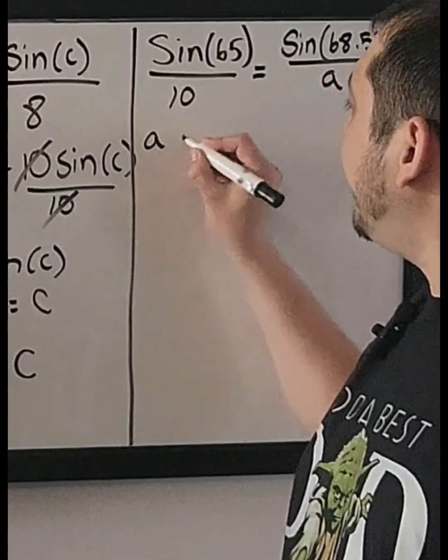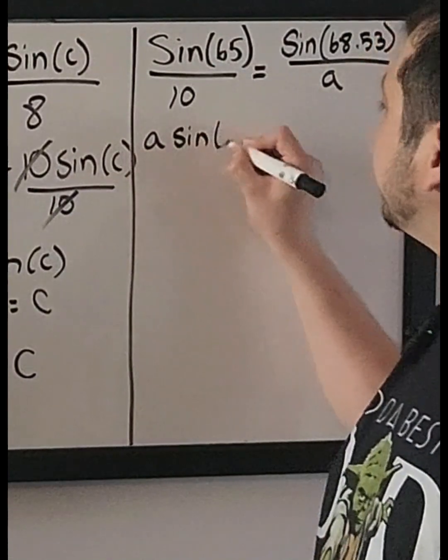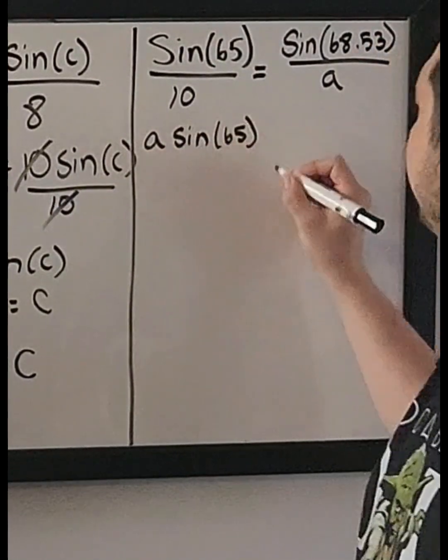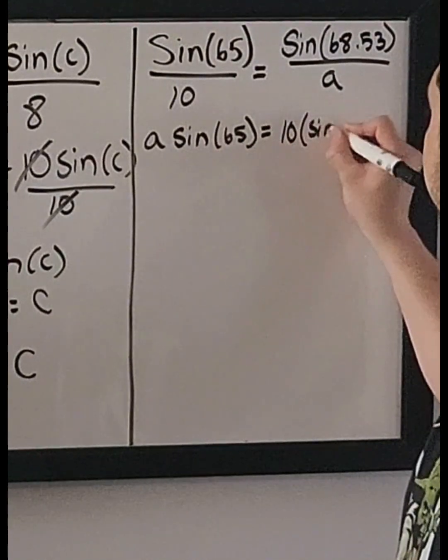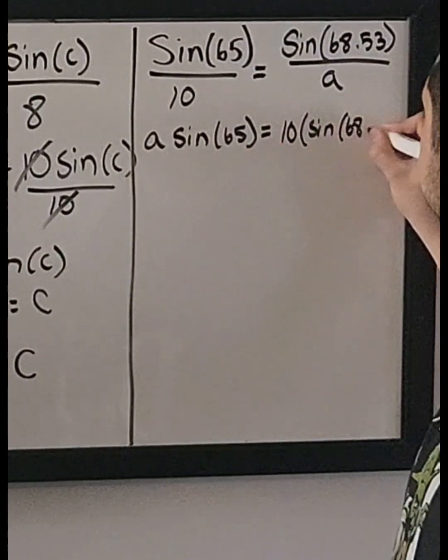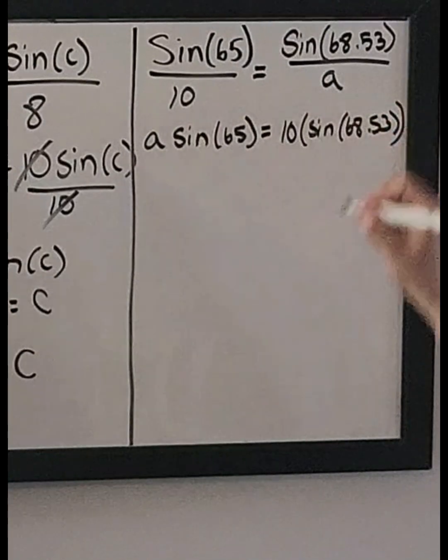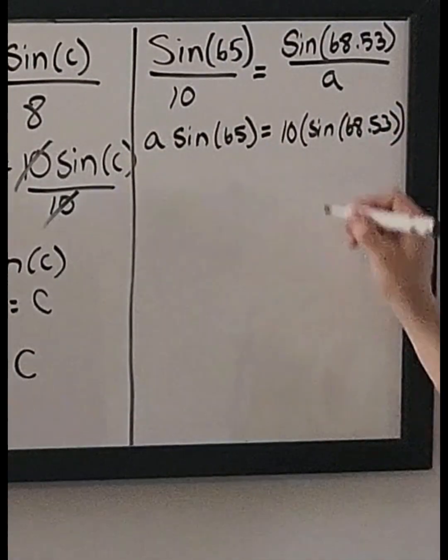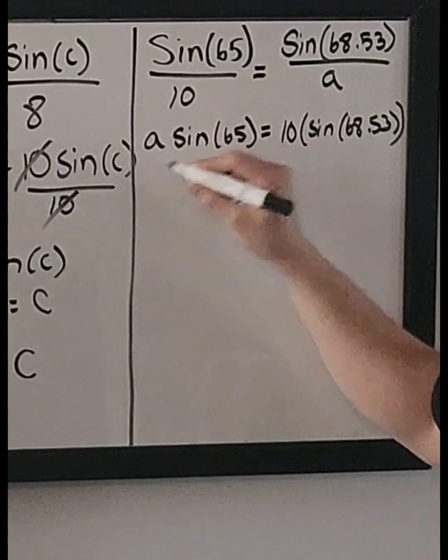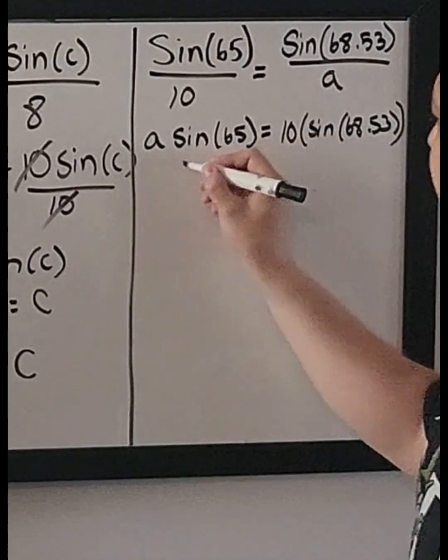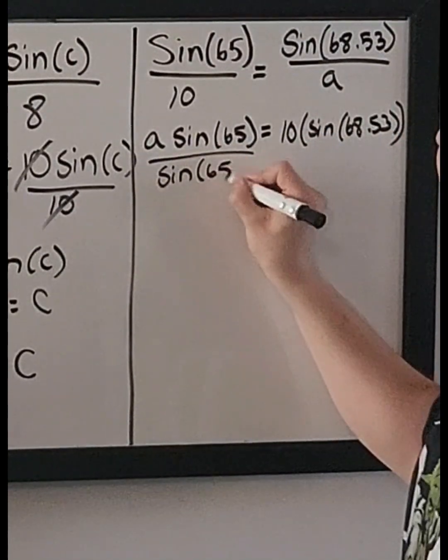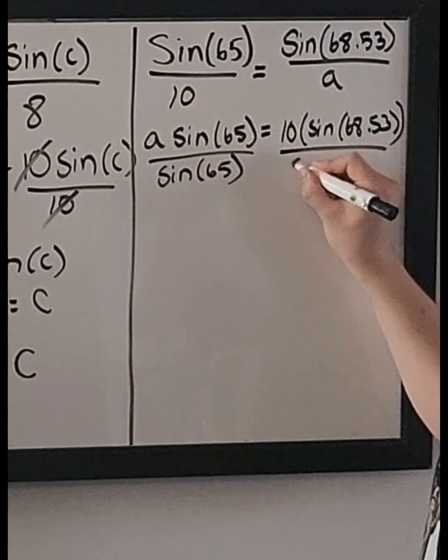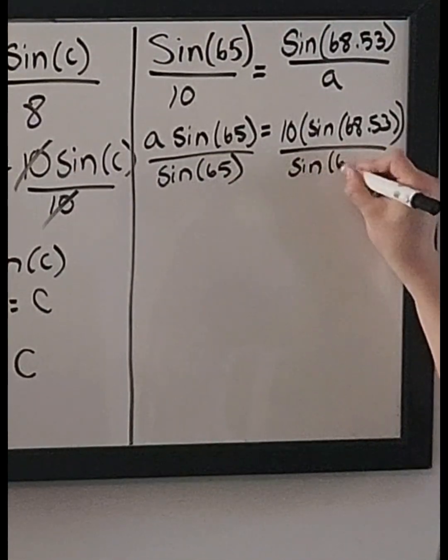So cross multiply here. You have A sine of 65 equals 10 times the sine of 68.53. Now divide by, but what do we need to solve for? We need to solve for A. Divide by the sine of 65.